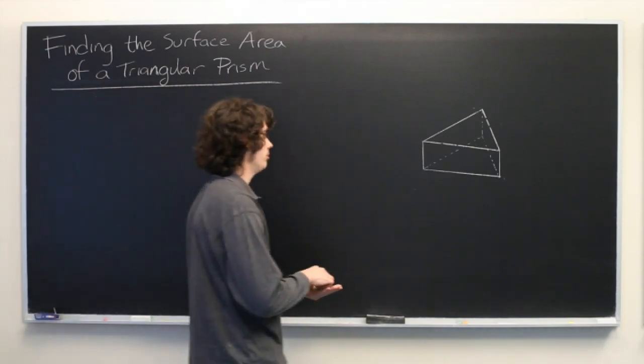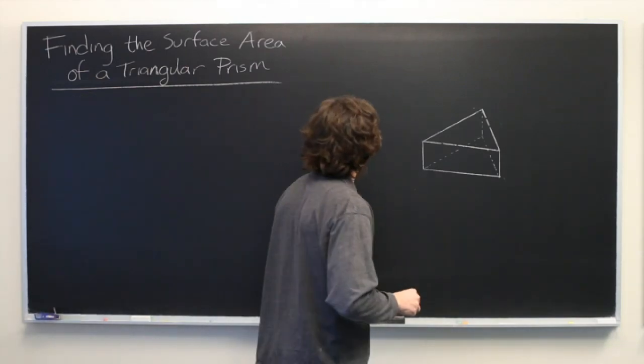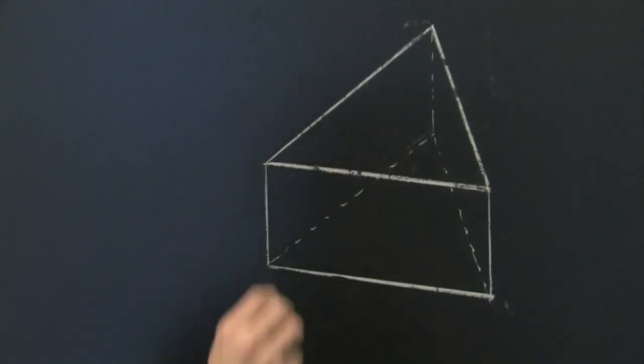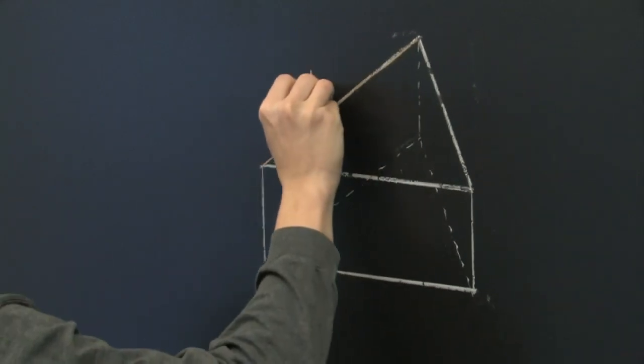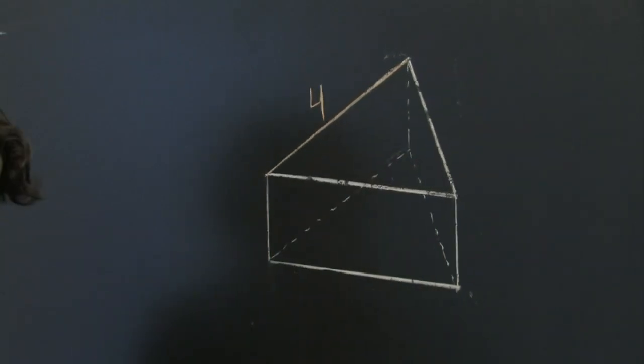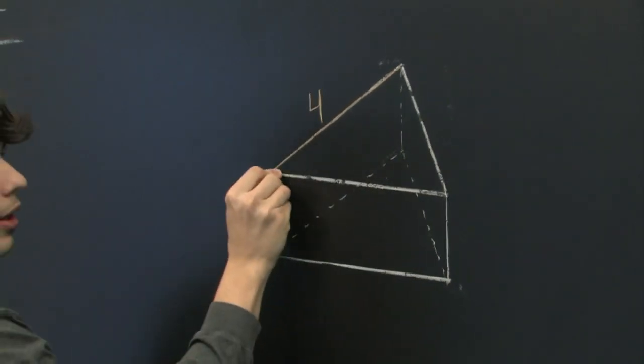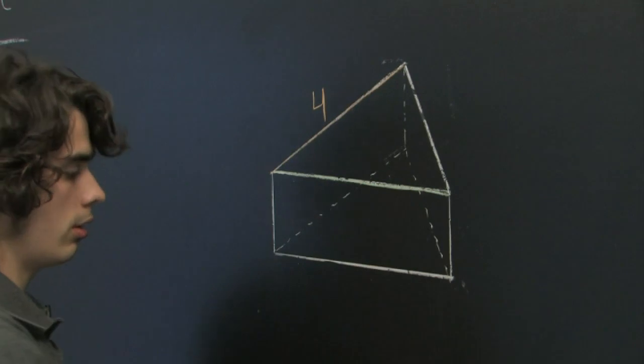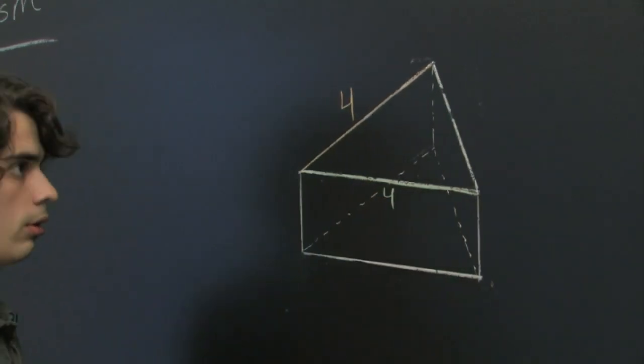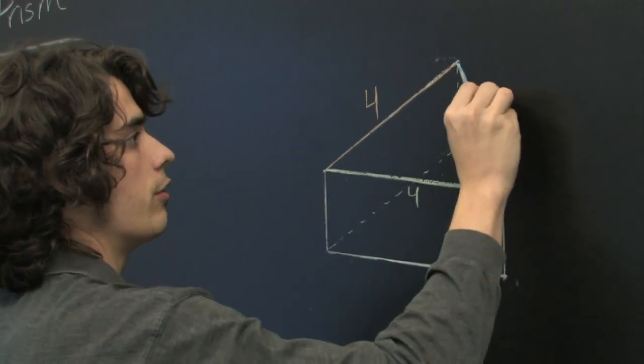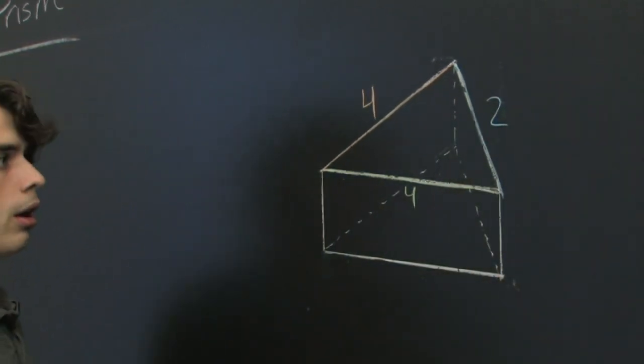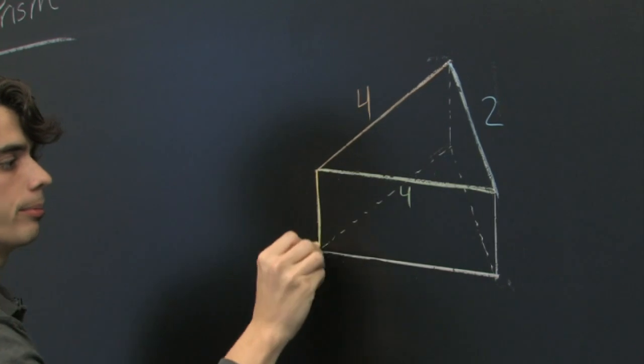Here we have a triangular prism and let's go ahead and give these sides some lengths. We'll say that this orange side has a length of 4. We'll say that this green edge also has a length of 4. The blue side length of 2. And then we'll say that the height of the prism is 3.